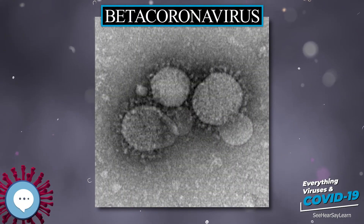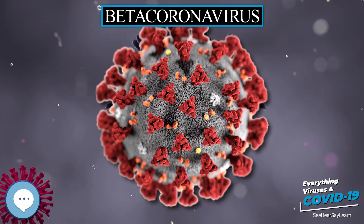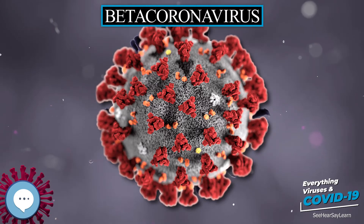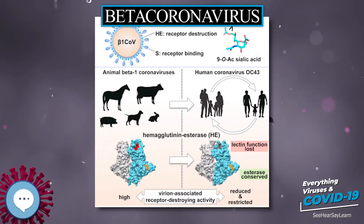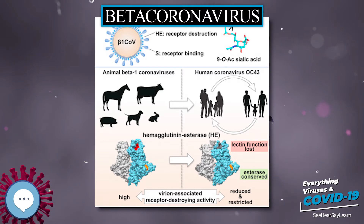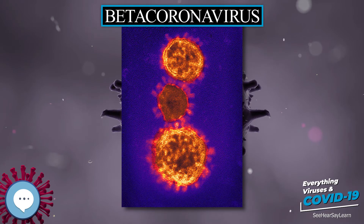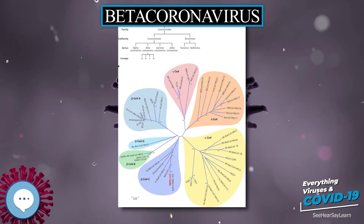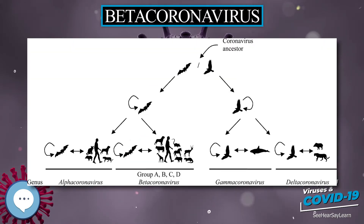Beta-coronaviruses, or beta-CoVs, are one of four genera of coronaviruses of the subfamily Orthocoronavirinae in the family Coronaviridae, of the order Nidovirales. They are enveloped, positive-sense, single-stranded RNA viruses of zoonotic origin. The coronavirus genera are each composed of varying viral lineages, with the beta-coronavirus genus containing four such lineages. In older literature, this genus is also known as group 2 coronaviruses.